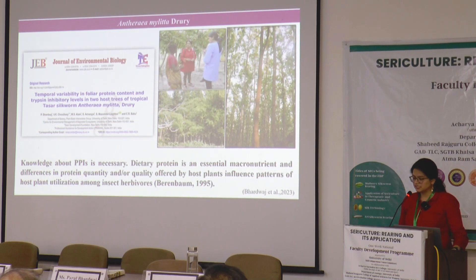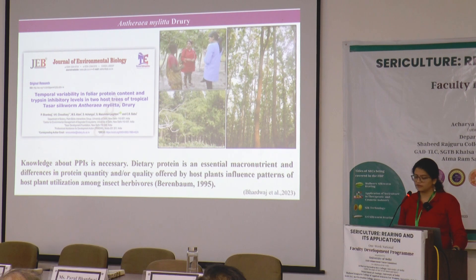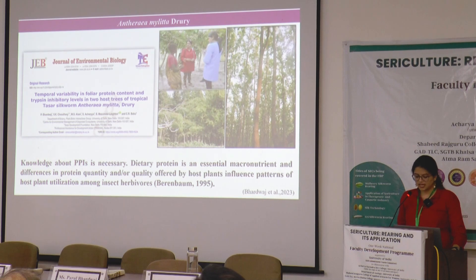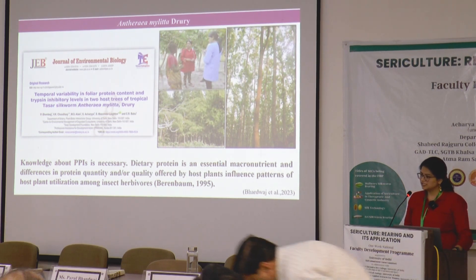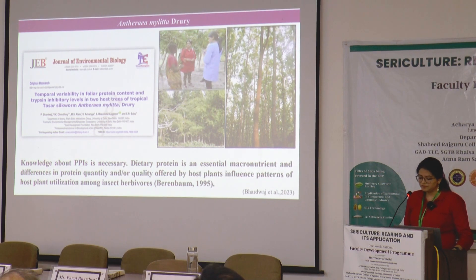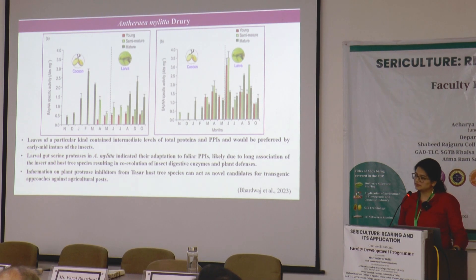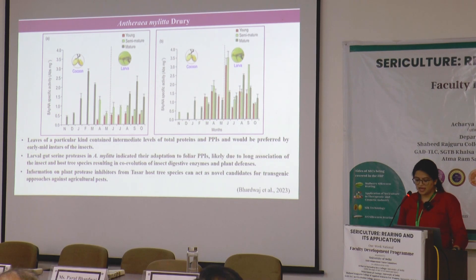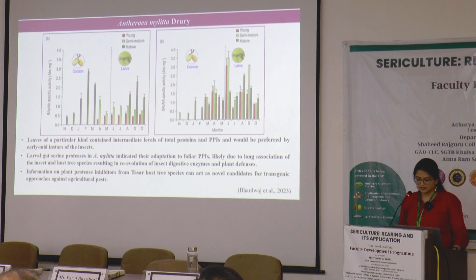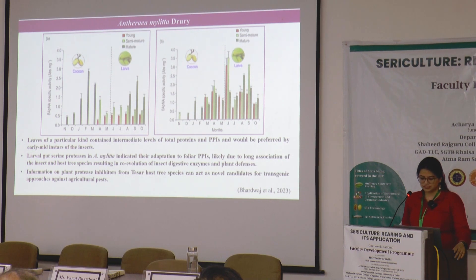In another study on the Tropical Tassar silkworm, temporal variability in foliar protein content and trypsin inhibitory levels were studied in two host trees. Knowledge about plant protease inhibitors is necessary, as dietary protein is an essential macronutrient and differences in protein quantity and quality offered by host plants influence patterns of host plant utilization among insect herbivores. It was found that leaves containing intermediate levels of total proteins and PPIs were preferred by early-to-mid instars. Larval gut serine proteases in Antheria myelita indicated adaptation to foliar inhibitors, most likely due to co-evolution of insect digestive enzymes and plant defenses.